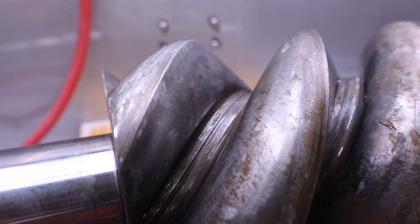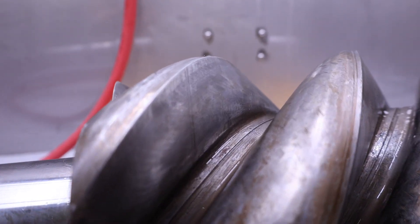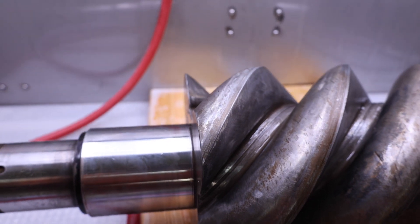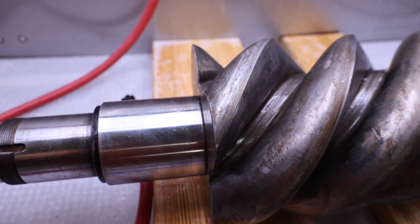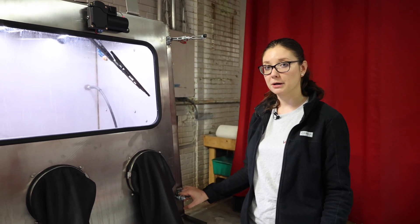We hydro blasted this portion instead of vapor honing because we just wanted to do degreasing and cleaning. Vapor honing does not change or damage the surface of your part, but this customer wanted to make absolutely sure that we made no changes to the mating surface of this component. We hydro blasted the first component, got it super clean, got all of the grease off.